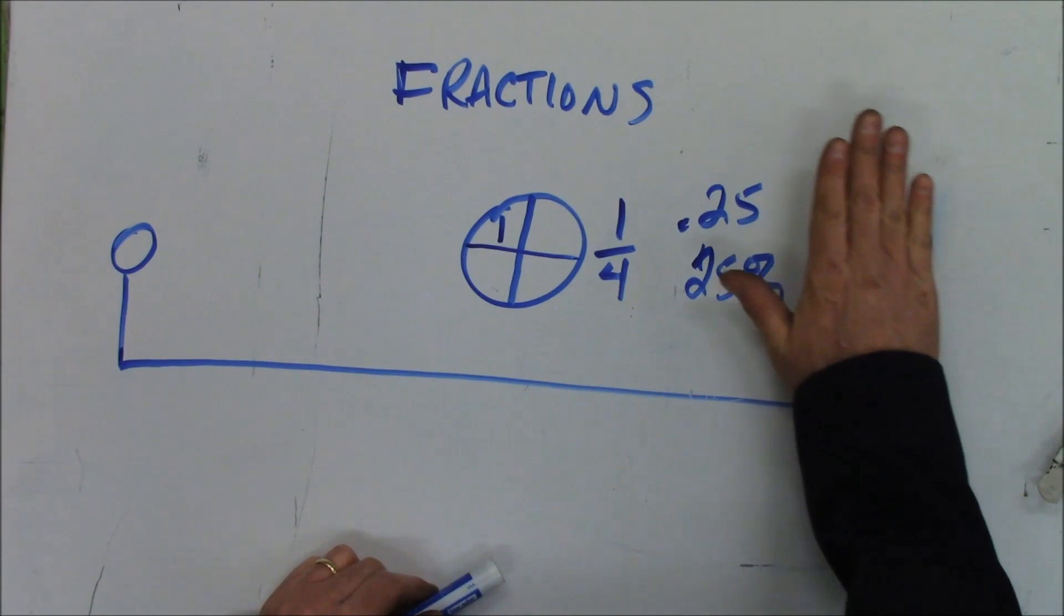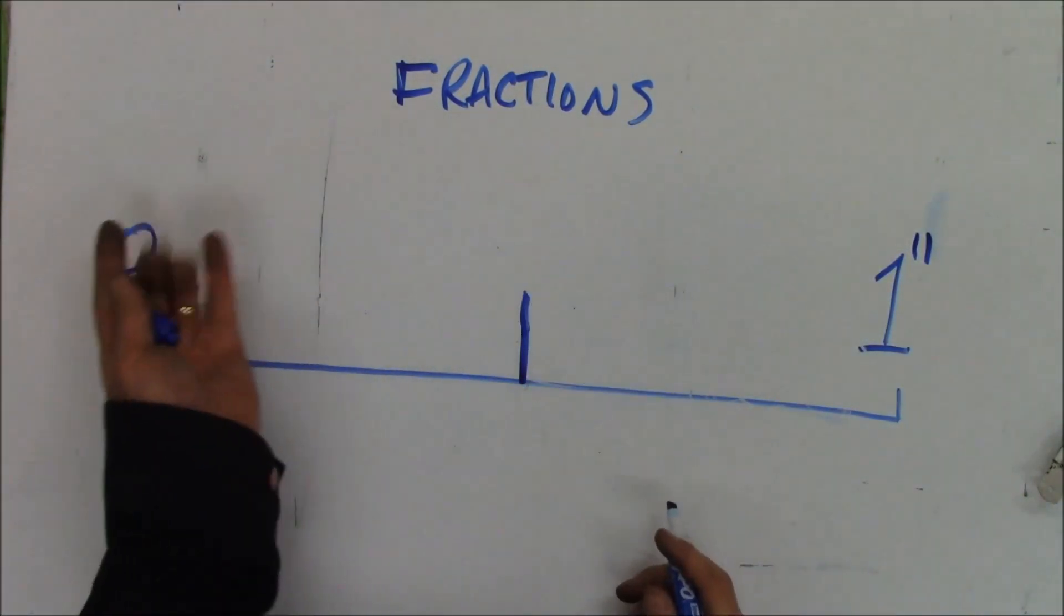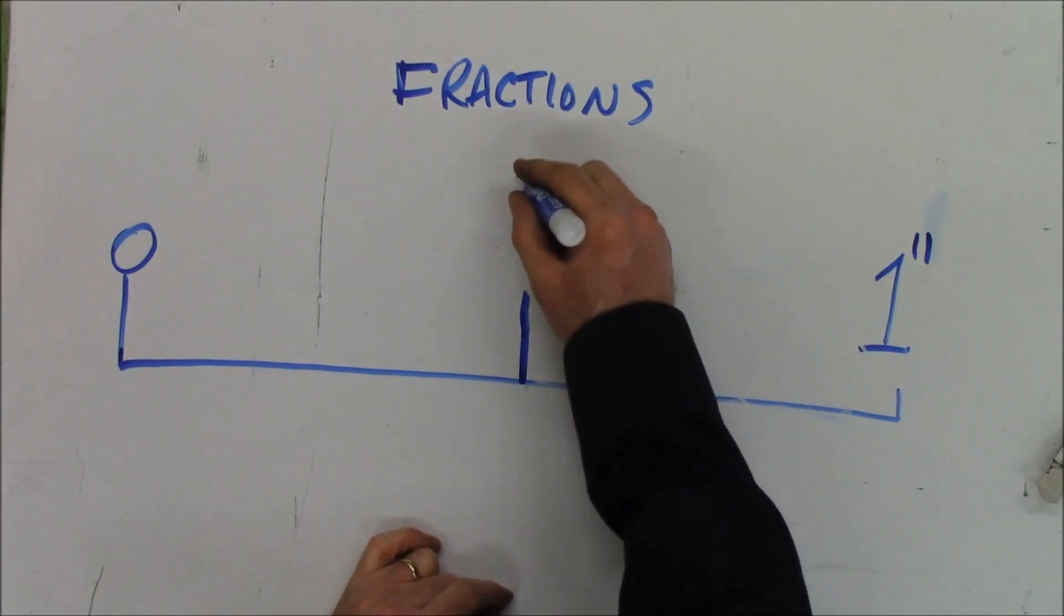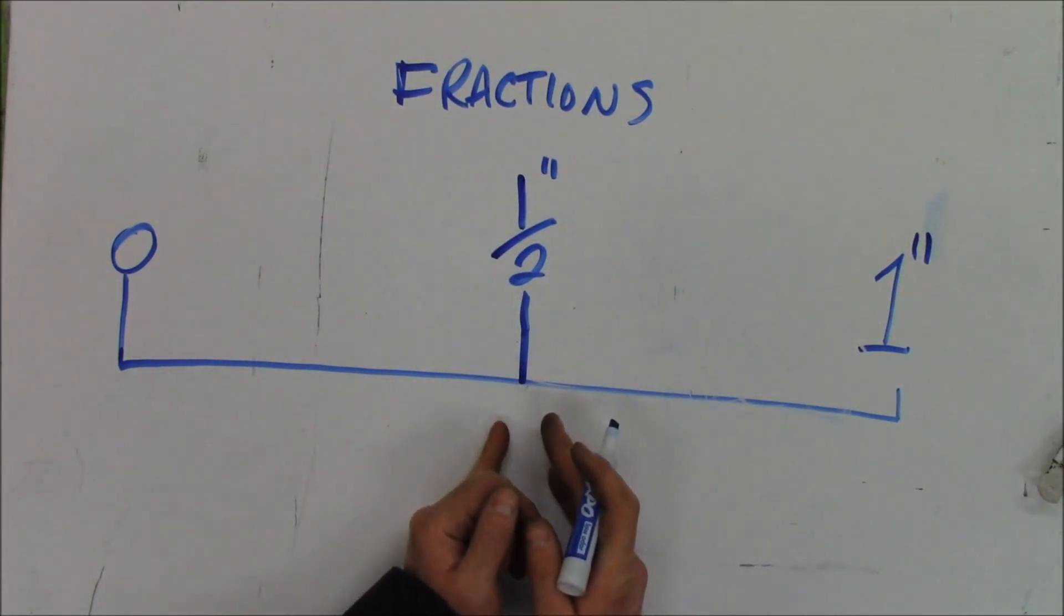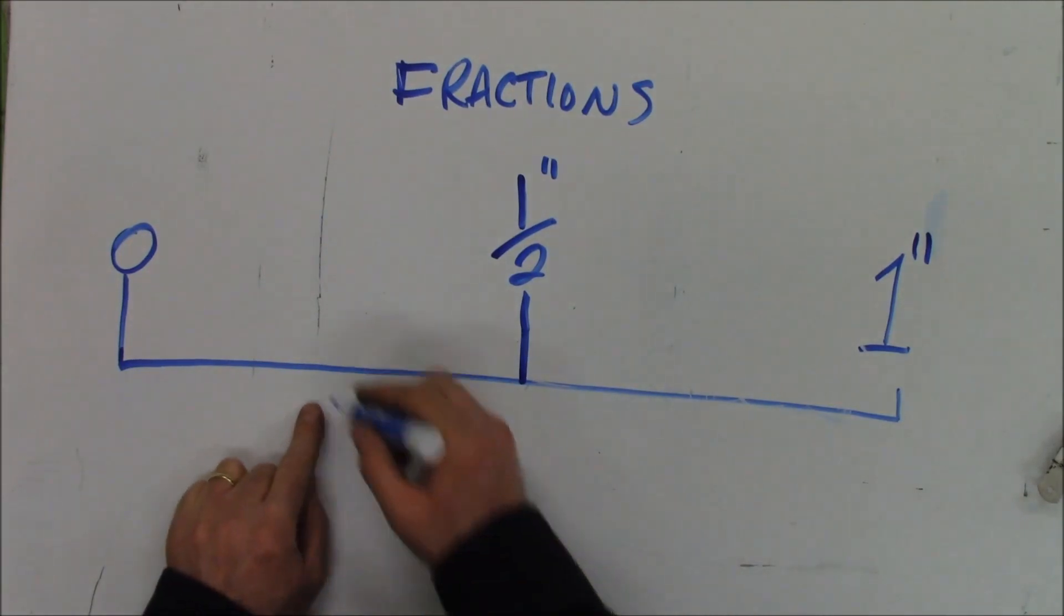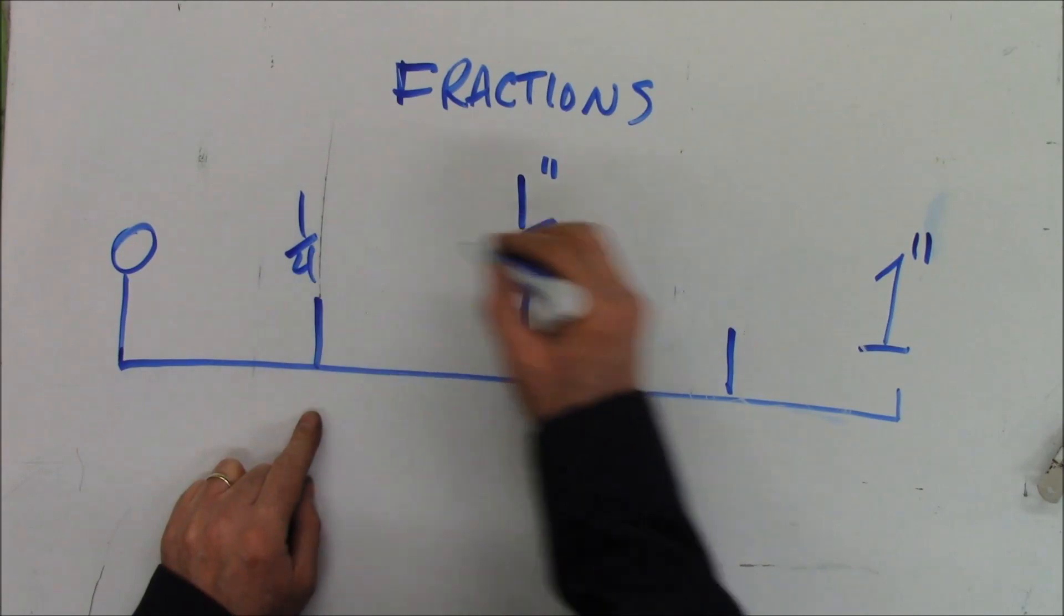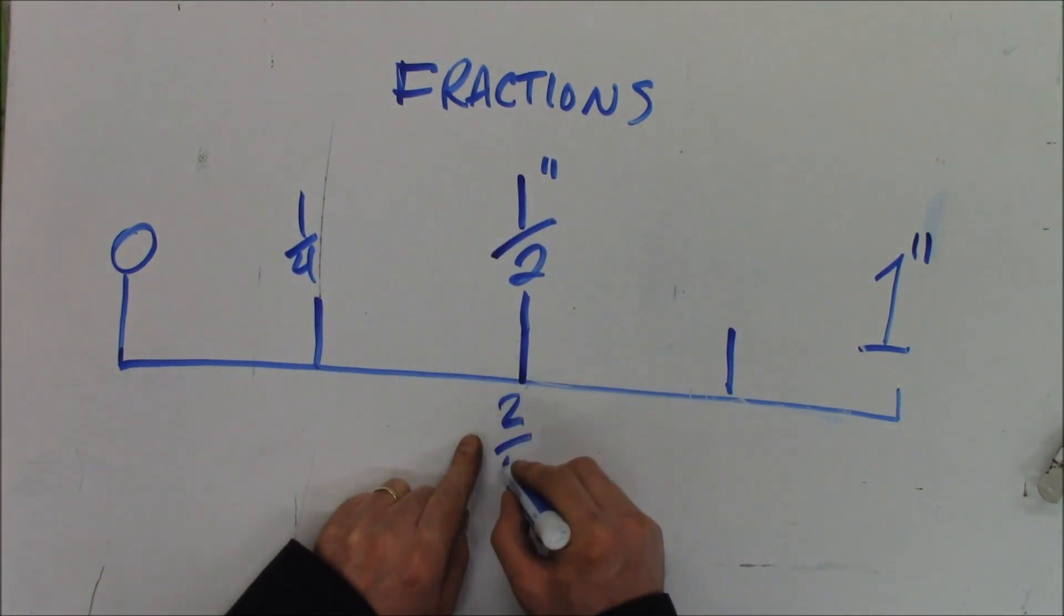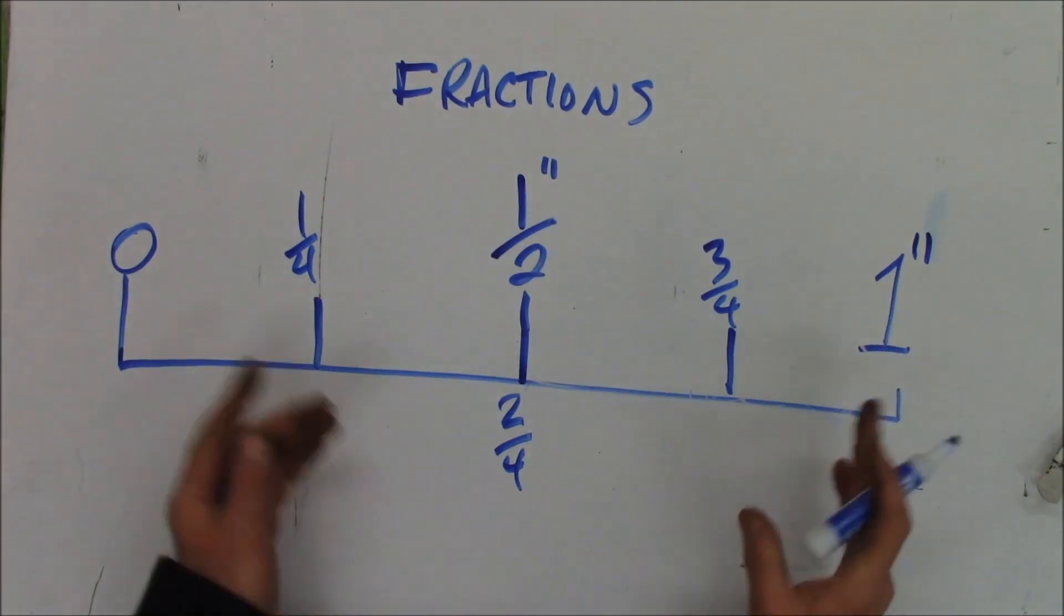Let's go back to imperial measurement. If I take zero to one inch, and I split it right here, I would have one part, two parts. When I get to this piece, I got one half of an inch. Maybe I want to go smaller. I could go here, and I would have one fourth. This would be two of four pieces, and this would be three fourths of an inch.